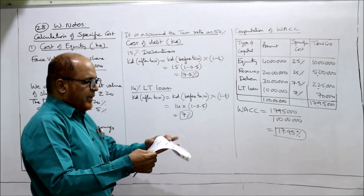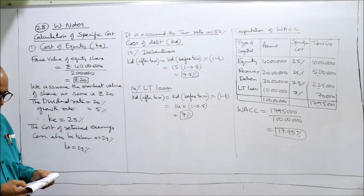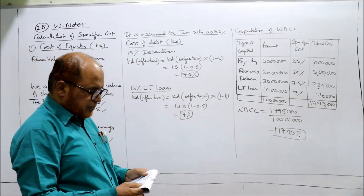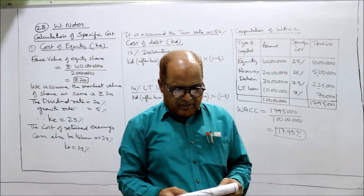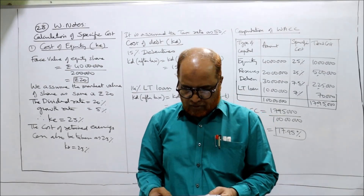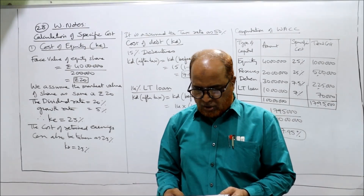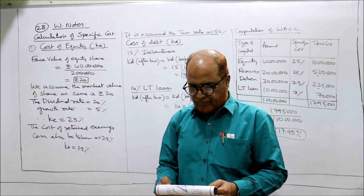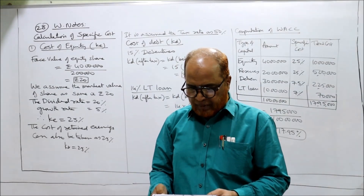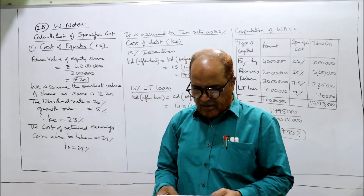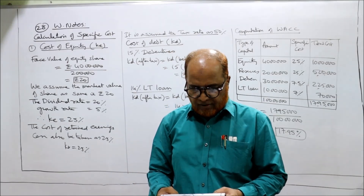Problem number 29: Mahindra Steels Limited has the following capital structure — 2 lakh equity shares of Rs. 10 per share, 20 lakh; retained earnings 10 lakhs; 15% debentures of Rs. 100 each, 15 lakh; 12% preference share of Rs. 10 each, 5 lakh. Determine the WACC. The market price of the equity share is 40 rupees, dividend is 4 rupees per share next year, dividends expected to grow at 8%, tax rate is 35%.